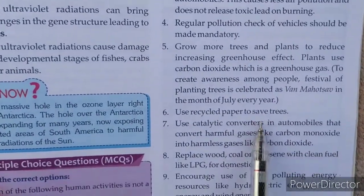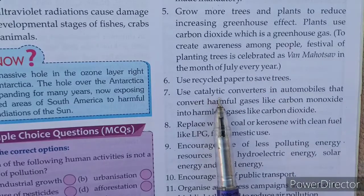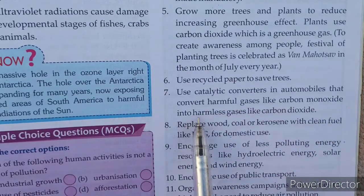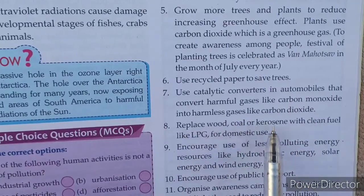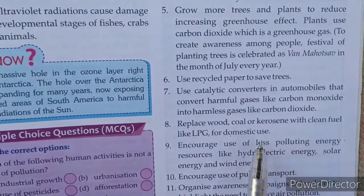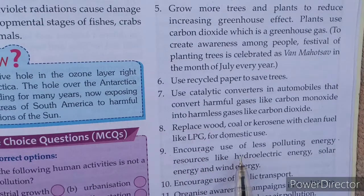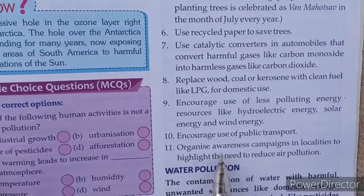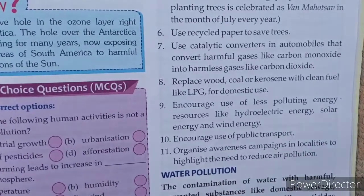Grow more trees. Recycle paper to save trees. Use catalytic converters in automobiles that convert harmful gases like carbon monoxide into harmless gases like carbon dioxide. Replace wood, coal and kerosene with clean fuels like LPG for domestic use. Encourage use of less polluting energy resources such as hydroelectric energy, solar energy and wind energy. Encourage use of public transport. Organize awareness campaigns in localities to highlight the need to reduce air pollution.